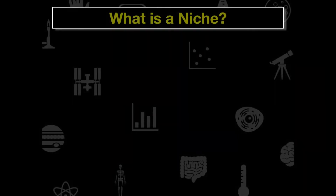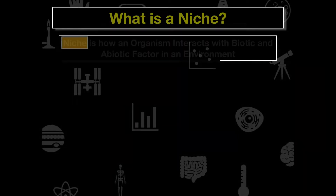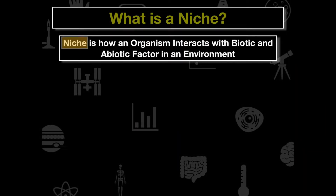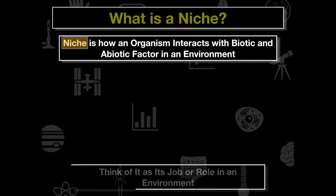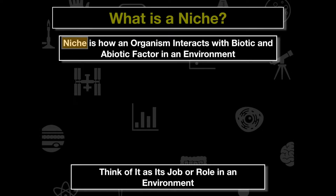So what is an ecological niche? A niche is how an organism is going to interact with its biotic and abiotic factors within its environment. We can think of a niche as a job or a role that each species is going to play in an ecosystem.